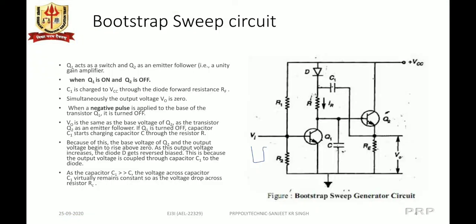The bootstrap circuit consists of two transistors, Q1 and Q2. The first transistor Q1 is acting as a switch, whereas the second transistor Q2 is used as an emitter follower, that is, a unity gain amplifier.